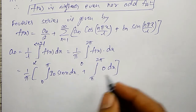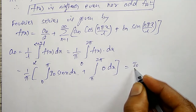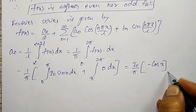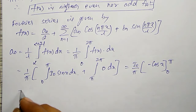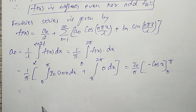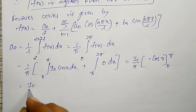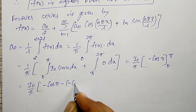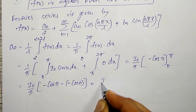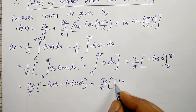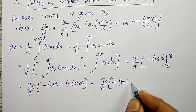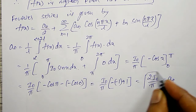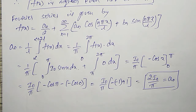For 0 to π, F(x) = I₀ sin x, and for π to 2π, F(x) = 0. Integrating: (I₀/π)[−cos x]₀^π = (I₀/π)[−cos π − (−cos 0)] = (I₀/π)[1 + 1] = 2I₀/π. Therefore A₀ = 2I₀/π.